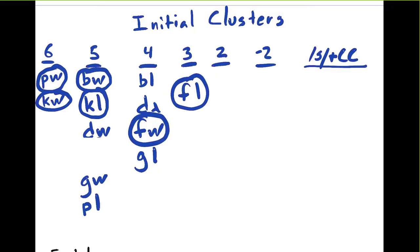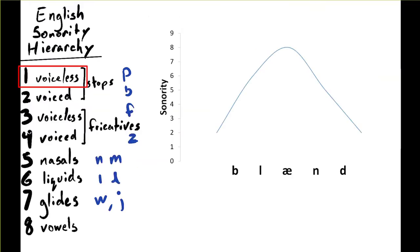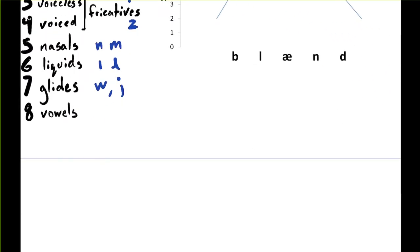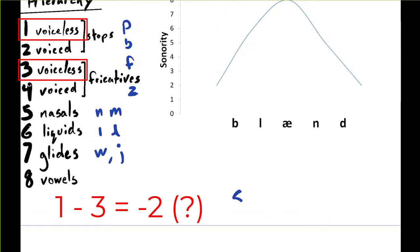Now that's going to be a negative sonority distance. K is a voiceless stop, that's a level of 1. And s is a voiceless fricative, that's a level of 3. So if we were to draw what that looks like, we are starting a little bit higher at a level 3, and then we're going down to a level 1, and then up again.